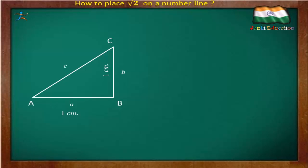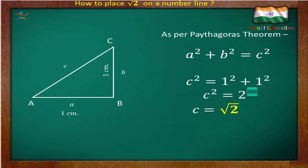When I said it is a right angle triangle, it reminds us about the Pythagoras theorem. As per Pythagoras theorem, a² + b² = c².